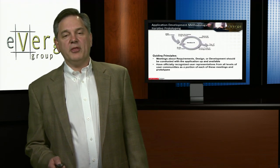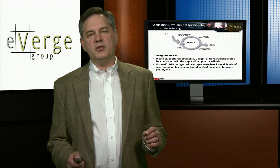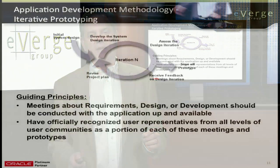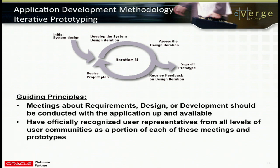Another key piece is knowledge transfer — enabling that there are no surprises at the end of the project. Our clients must have knowledge transferred to them throughout the project so they're ready to be self-sustaining as they go live. One important feature of Precision Fit mentioned in that last diagram is prototyping — what we call iterative prototyping. Once you have a design down, you develop some of it, show it to the customer, get their feedback, assess it, incorporate it, and do this continually through a loop until the application is ready to be accepted.